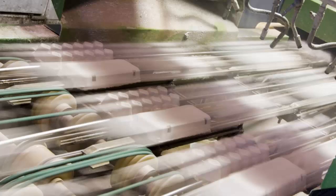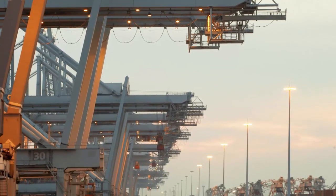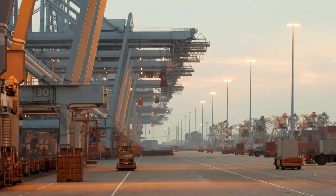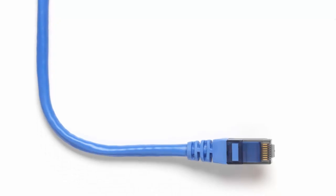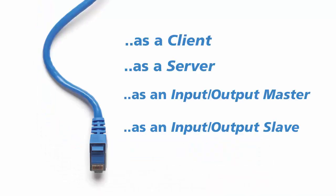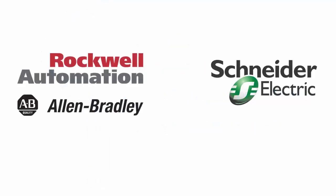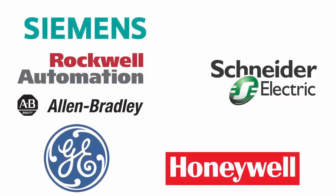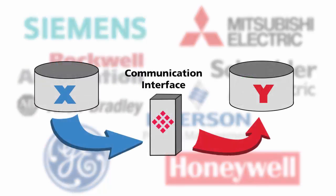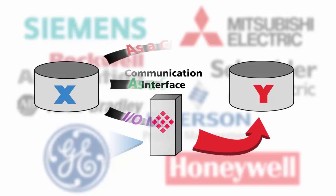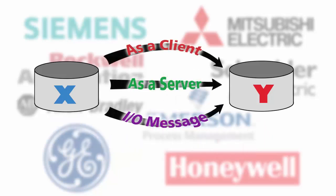Ethernet communications in the industrial sector is on the rise. The advantages in speed and accessibility over serial communications are making it the new standard for industrial communication. Industrial automation protocols have several methods of communicating. When devices from different automation suppliers need to communicate with each other, specialty communication interface products are required. Selecting the ideal method depends on your specific application requirements.